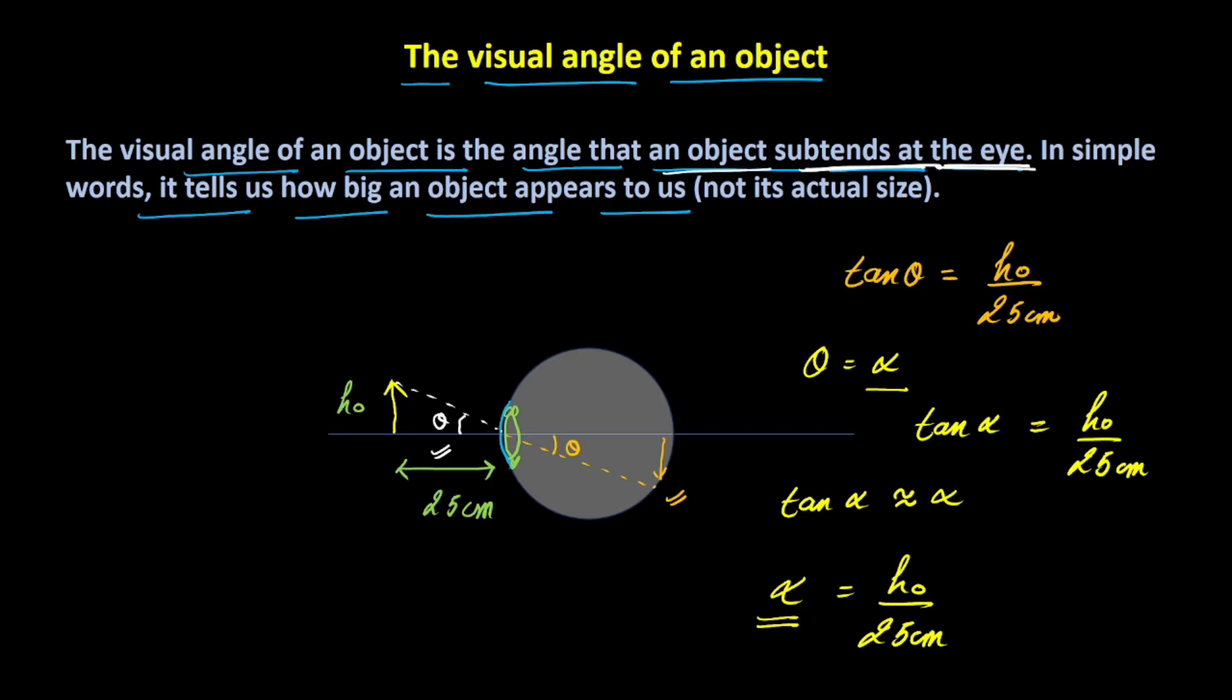If this alpha can be increased somehow, if this angle can somehow be increased, then the object will appear magnified to us.